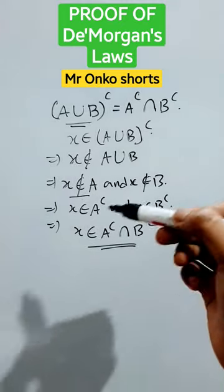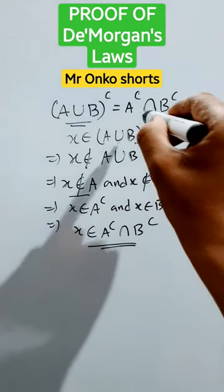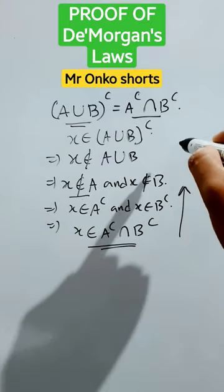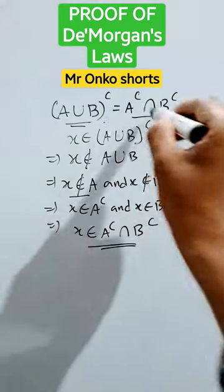So simply converse way we have to assume Y belongs to here and the opposite process will be followed, and thus we can prove that this equals to this.